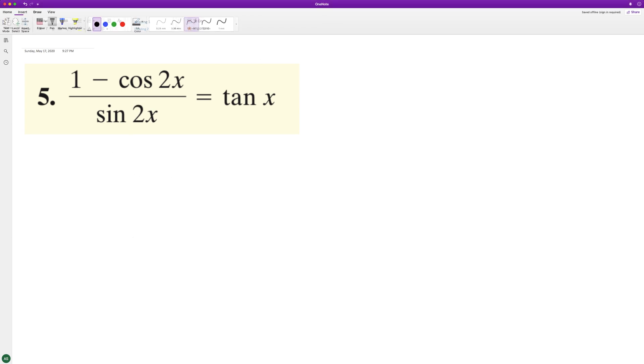What we'll do is convert these double angle formulas. This is going to be one minus - we'll have the double angle cosine the same. There's a few different ways to do it, but here's one.